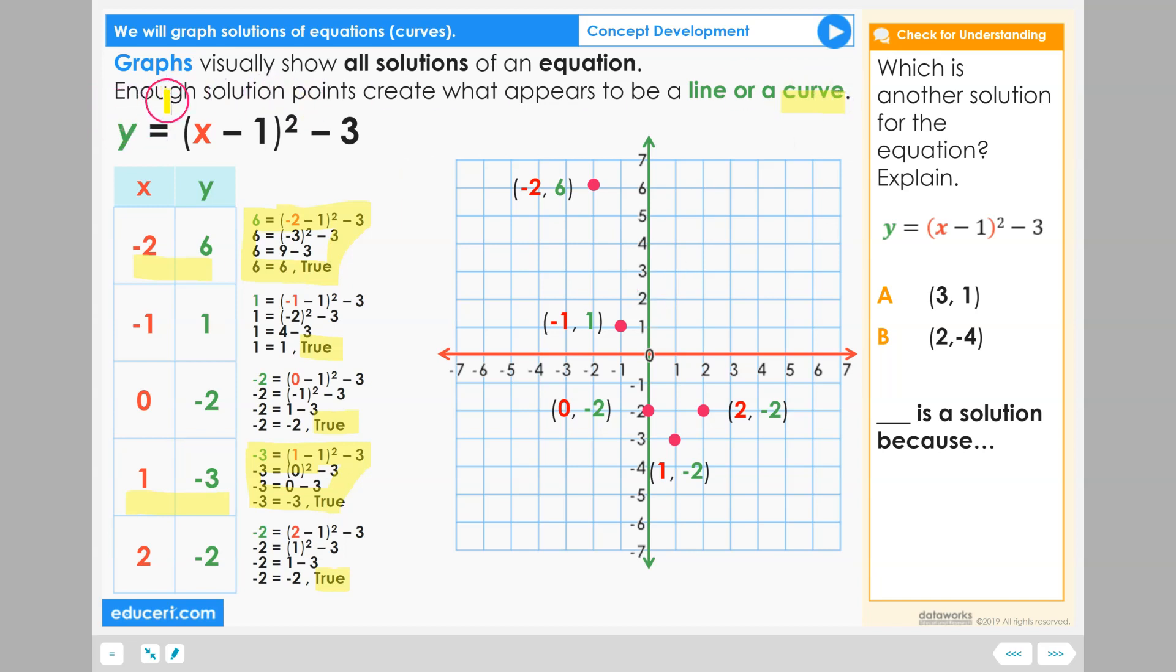So let's read. Enough solution points create what appears to be a line or a curve. Here are those five points that we have confirmed as solutions plotted on our graph, and we begin to see that this has got a little bit of a curve.